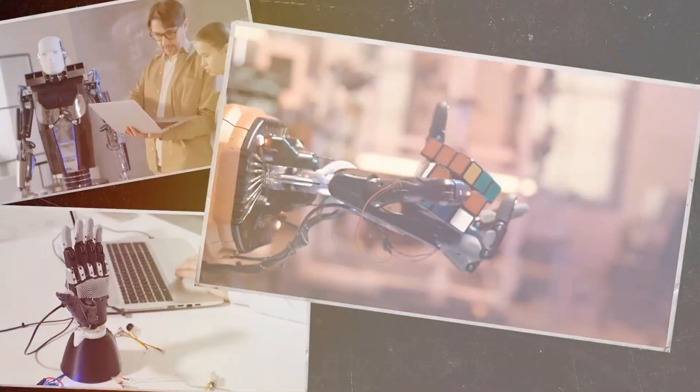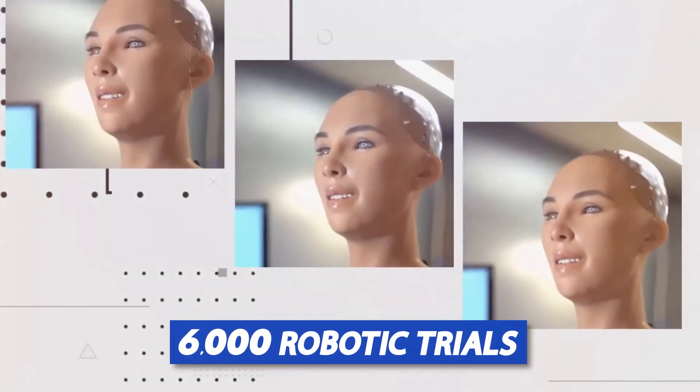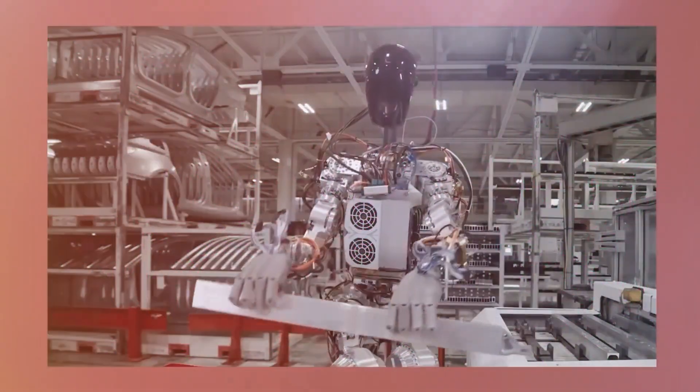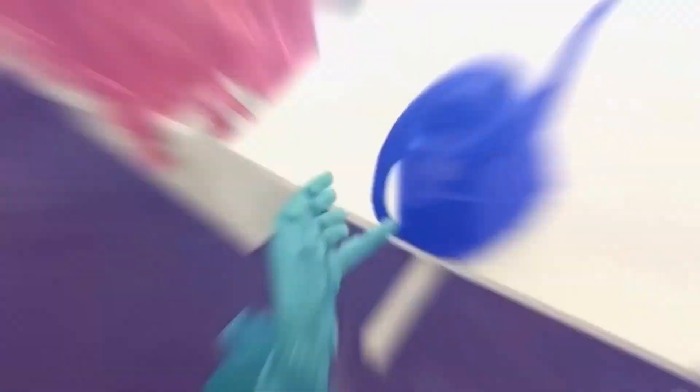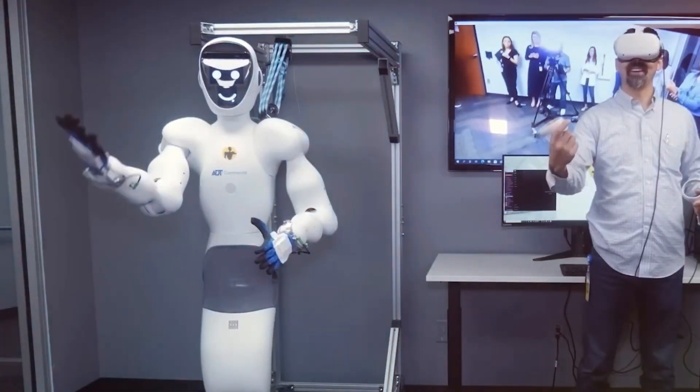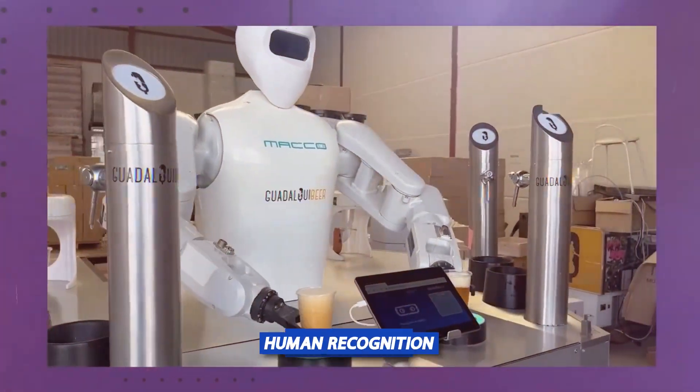What are the generalization and emergent skills from RTX? They conducted a number of qualitative and quantitative studies on RTX models throughout nearly 6,000 robotic trials. In order to investigate RTX's emergent capabilities, they first looked for tasks that would necessitate merging information from web-scale data with the robot's experience, and then they created three skill categories: symbol interpretation, reasoning, and human recognition.